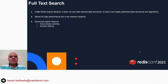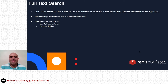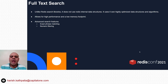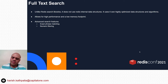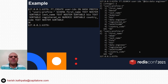Redis Search is a powerful text search engine built on top of Redis as a Redis module. Previously, inverted indexes built on top of Redis used native Redis data types like sorted sets. Redis Search uses its own highly optimized data structures and algorithms that provide advanced search features with a low memory footprint and high performance.